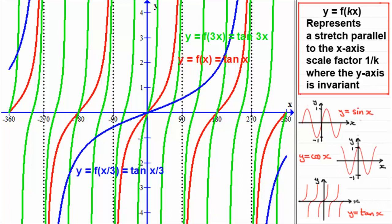For f of a third x, k is a third, so the scale factor is 1 divided by a third, which is 3. We're pulling out the original graph of y equals tan x by a scale factor of 3, parallel to the x-axis. The asymptote at 90 degrees is pulled out to 3 times that — 270 degrees. Where the graph crossed the x-axis at 180 degrees, it's now 3 times that — 540 degrees. That curve will be heading towards 540 degrees.